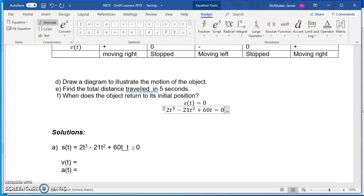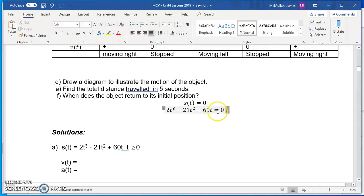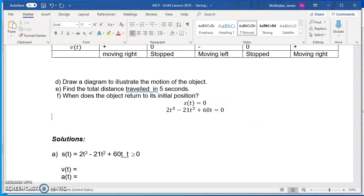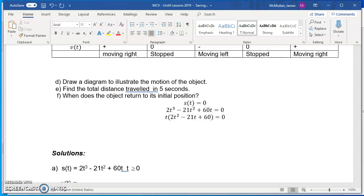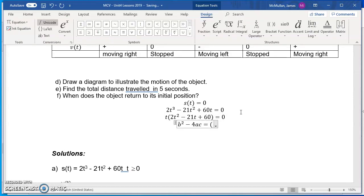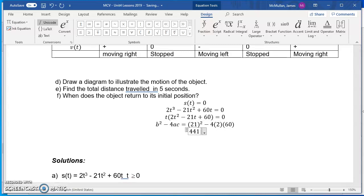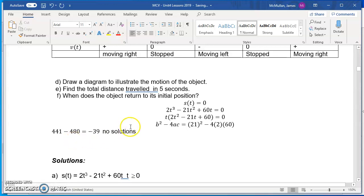So velocity. The velocity function, just to look at it one more time, we'll just get it here quickly. So the velocity function is 6x squared minus 42x plus 60. That would be, so it's a parabola. It opens upward, which means, and we know it has intercepts at 2 and 5. So it's 0 here. It's 0 here. It's positive to negative to positive. So underneath this, we're just going to write moving right, stopped, moving left, stopped, moving right.